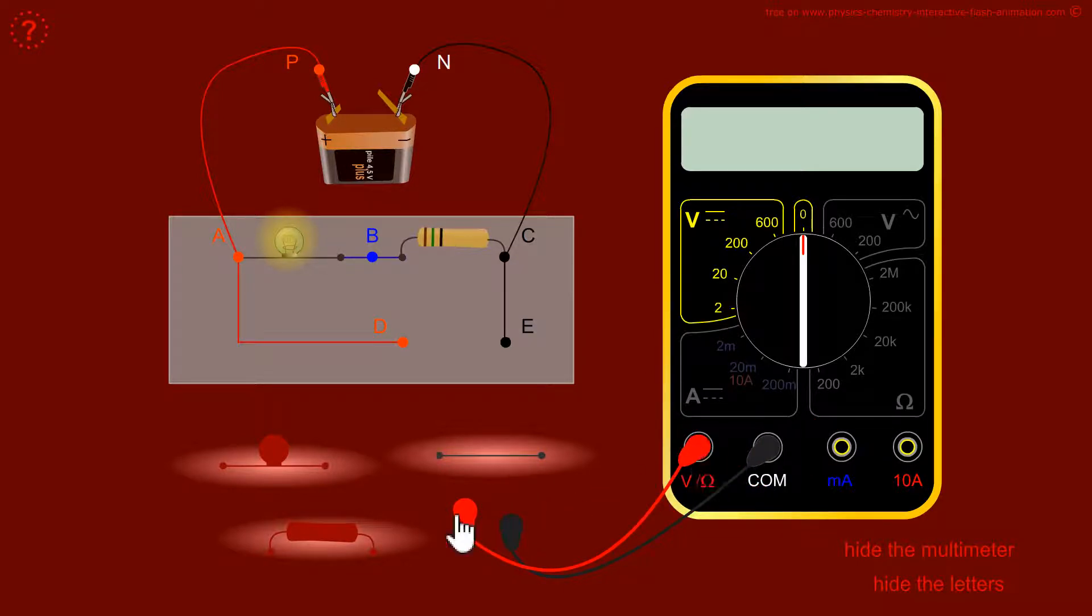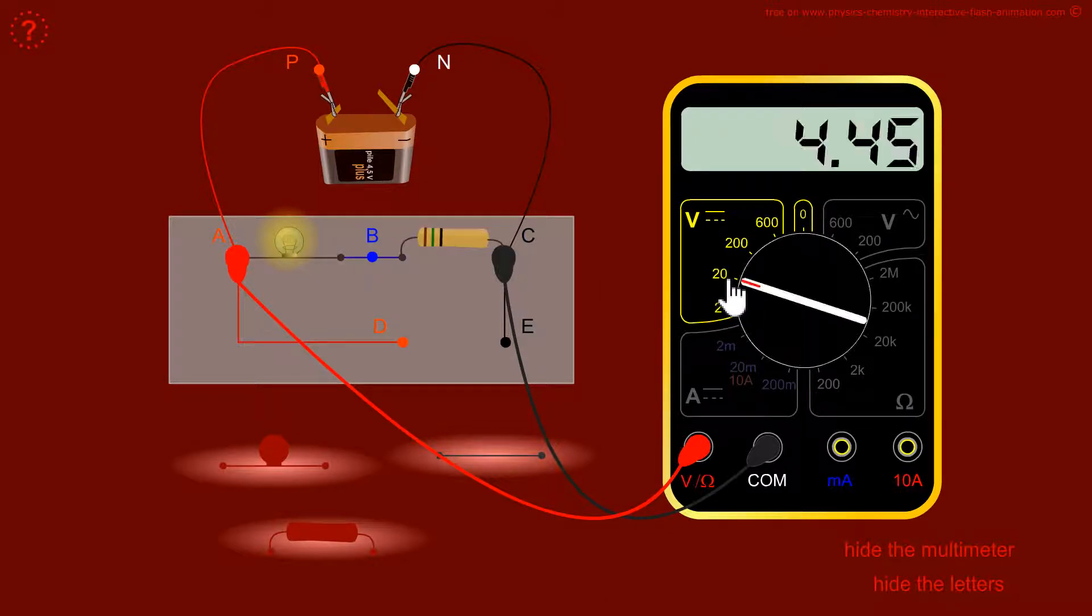When we measure at terminals A and C, between points A and C, across a battery we can go on 20 volts. We measure 4.45 volts. The screen here gives volts because the range is 20 volts and the unit of the DMM screen is the same as the range.